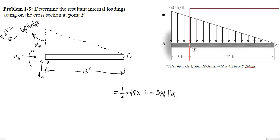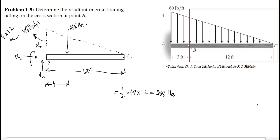This force of 288 pounds will act at a distance of 4 feet from point B. Now all the three resultant internal loadings acting on the cross-section at point B can be determined by applying the three conditions of equilibrium.